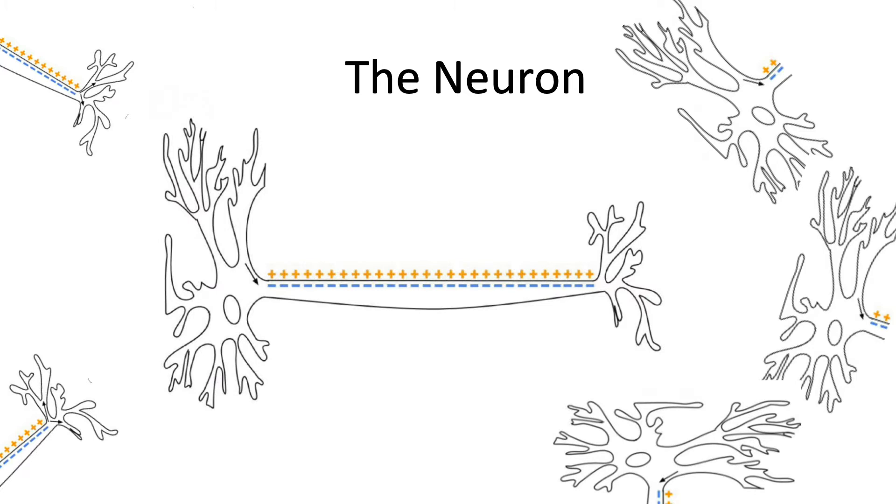Neurons pass information through the network using a complex exchange of ions—charged particles—and other chemical signals such as neurotransmitters. This is a picture of one neuron surrounded by its neighbors in a resting state. The movement of ions from inside to outside the neuron is how neurons release neurotransmitters and talk to each other.